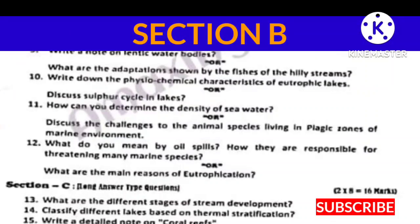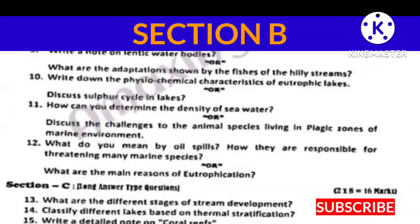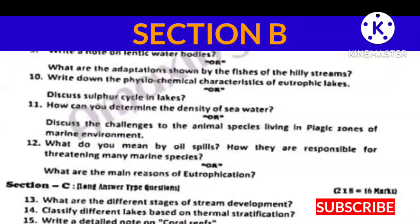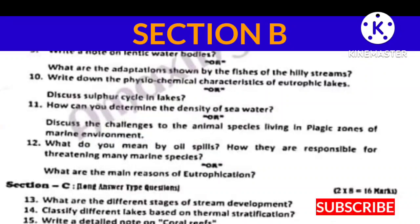Section B — medium type answer questions: Write a short note on lentic water bodies, or what are the adaptations shown by the fishes of elicit streams? Write down the physico-chemical characteristics of eutrophic lakes, or discuss the sulfur cycle in lakes. How can you determine the density of seawater, or discuss the challenges to the animal species living in pelagic zones of the marine environment? What do you mean by oil spills — how are they responsible for threatening many marine species?